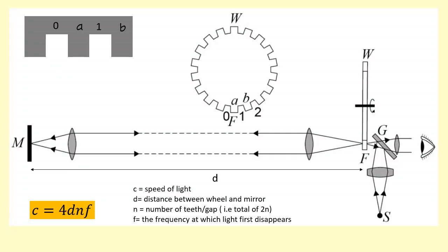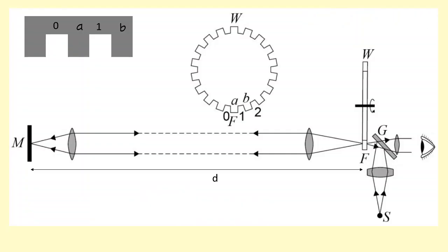This equation will give us the speed of light. C is the speed of light. D is the distance between the wheel and the mirror. And n is the number of teeth and gaps. So if there are n teeth and n gaps, the total number of teeth and gaps is going to be 2n. F is the frequency at which light first disappears, meaning it's the frequency at which it goes in but doesn't make it out.